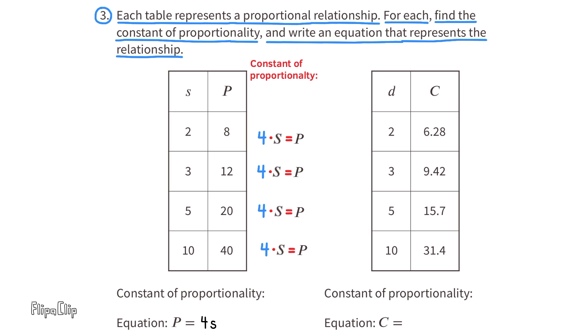For the table on the right, we need to find the constant of proportionality, and we need to write an equation to represent the value of c. C divided by d would tell us the constant of proportionality. 6.28 divided by 2 equals 3.14. So the constant of proportionality is 3.14. We divided 6.28 by 2 to get 3.14. Now we have to divide 2 by 2, and that gives us 1. So when the value for d is 1, the value for c is 3.14. So the equation would read c equals 3.14 times d, which is the same as c equals 3.14d.